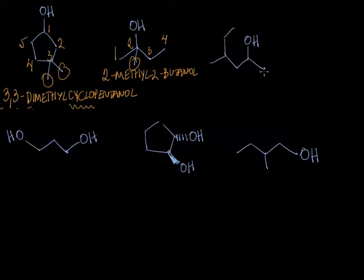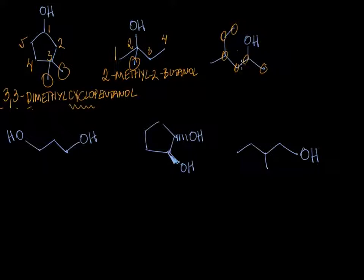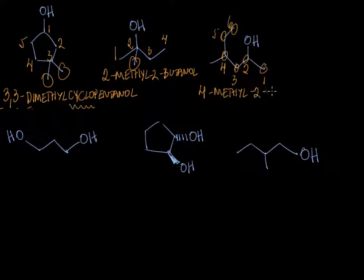Here you might be tempted to think the longest chain is running horizontally, but if you look carefully, you'll see that the longest chain actually zigzags through the molecule, and it contains six carbons. Let's go ahead and number those carbons, again placing the hydroxyl group at the lowest possible numbering. We have a methyl group attached to carbon-4, so this is going to be 4-methyl-2-hexanol.